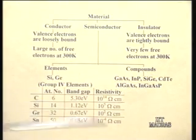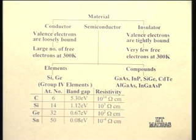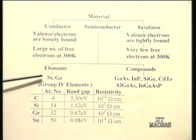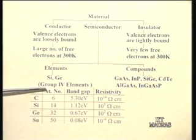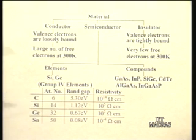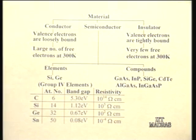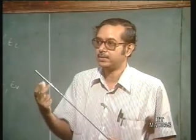You also have ternaries like aluminum gallium arsenide, or quaternaries like indium gallium arsenide phosphide. In this course we shall mostly concentrate on the elemental semiconductor silicon. Interestingly, if you look at the group 4 elements — carbon, silicon, germanium, tin — as atomic number increases and atom size increases, the band gap reduces. Smaller atoms have electrons more tightly bound, requiring more energy to free them.